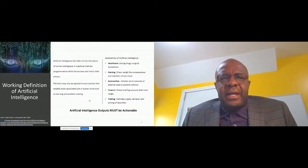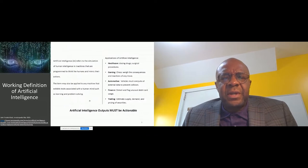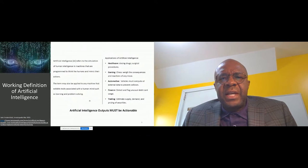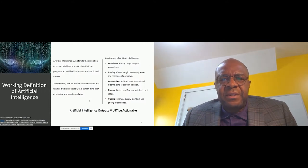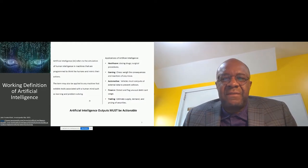To jump into it — here is a working definition that I'm comfortable with: AI refers to the simulation of human intelligence in machines that are programmed to think like humans and mimic their actions. This term may be applied to any machine that exhibits traits associated with a human mind, such as learning and problem solving.